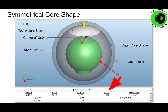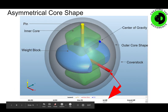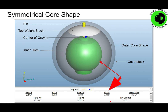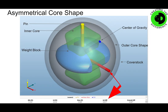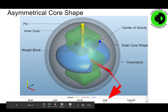For comparison purposes, this is a symmetrical core shape. You can see the pin and the center of gravity. This has an inner top weight block, inner core, outer core shape, and cover stock. What's interesting is there's no intermediate differential — noted here as zero. Conversely, on the asymmetrical ball, it's got an intermediate differential of 17. That is really what is the difference between a symmetrical and an asymmetrical core shape. A symmetrical core shape won't have an intermediate differential before drilling; an asymmetrical core shape will.